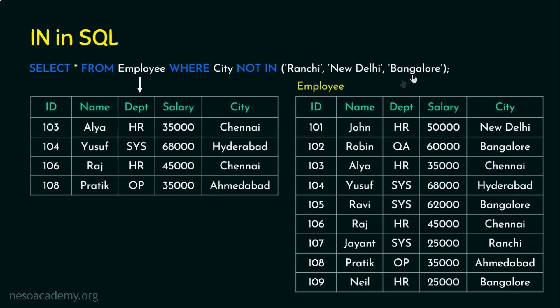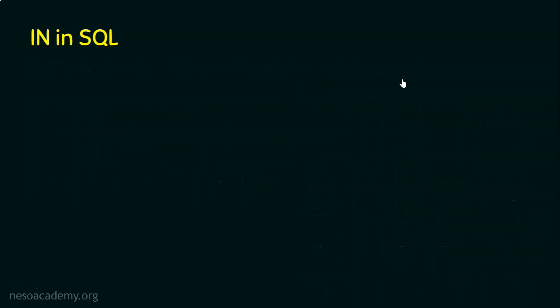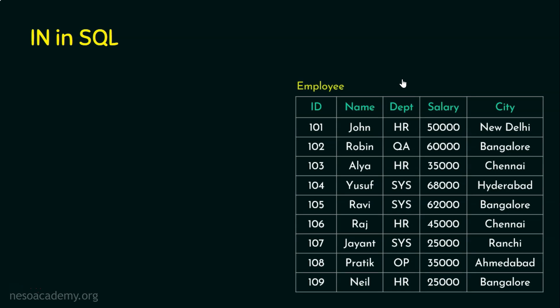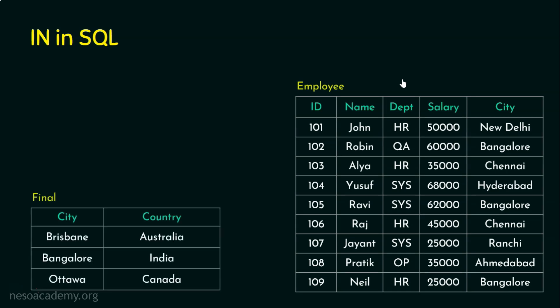Now let's make things more interesting by introducing a nested query. A nested query is a query inside another query. We'll use the employee table plus an additional table called 'final', which has two columns: city and country. It contains: Brisbane (Australia), Bangalore (India), and Ottawa (Canada).